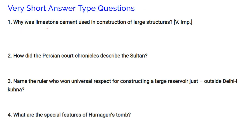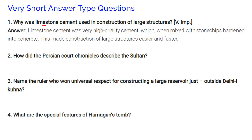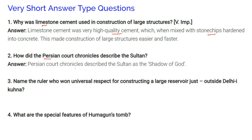Question: Why was limestone cement used in the construction of large structures? Limestone cement was very high quality cement which, when mixed with stone chips, hardened into concrete — this made construction of large structures easier and faster. Question: How did the Persian court chronicles describe the Sultan? The Persian court chronicles described the Sultan as the shadow of God, naming the ruler who won universal respect for constructing a large reservoir just outside Delhi, referring to Sultan Iltutmish.